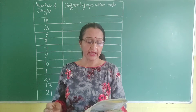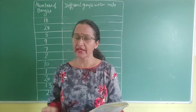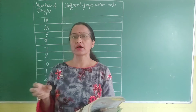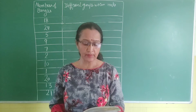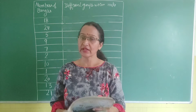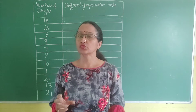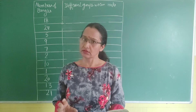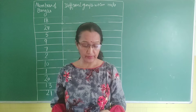So she made a group of 2, a group of 3, a group of 6, a group of 9, and a group of 18 from those bangles. She did this without any bangles being left over — that is, when she made the groups, no bangles remained. All groups were complete.